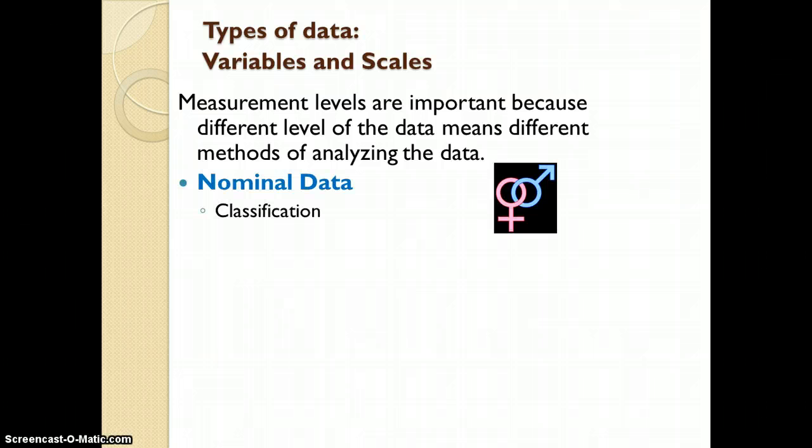The first measurement level is called the nominal level. The characteristic of this level is that it is only a classification. We can't say anything about the order of the individuals, just that they belong to a class, for example males or females.